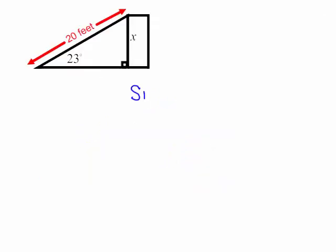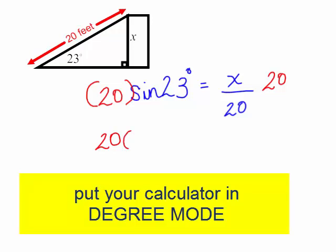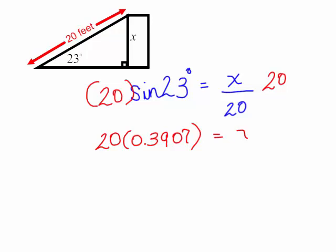So I will have the sine of 23 degrees is equal to the opposite over the hypotenuse. That would be X over 20. In order to solve for X, I am going to multiply both sides by 20. Once again, make sure your calculator is in degree mode. But the sine of 23 degrees is approximately 0.3907. On the right side, the 20s will cancel.